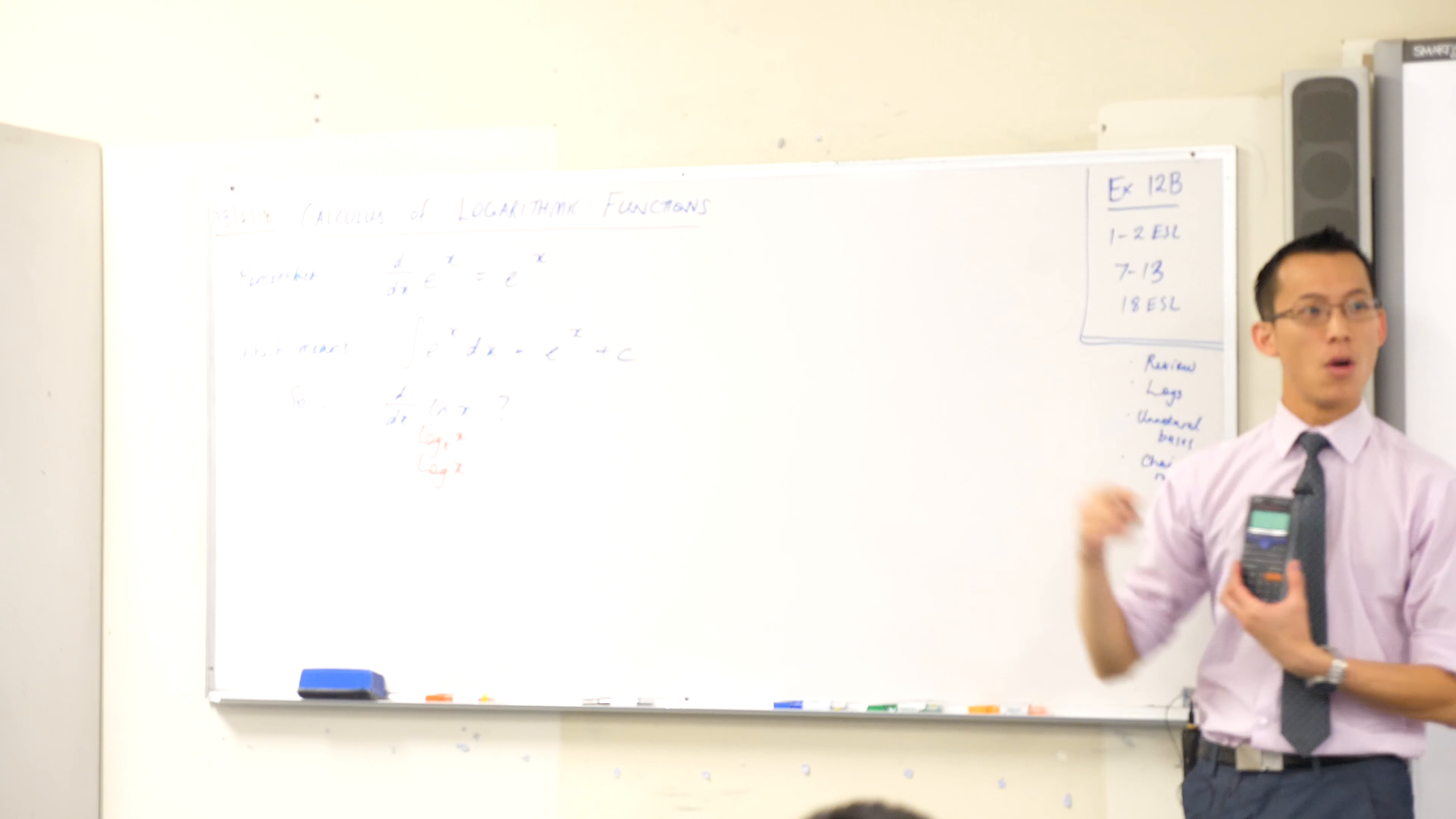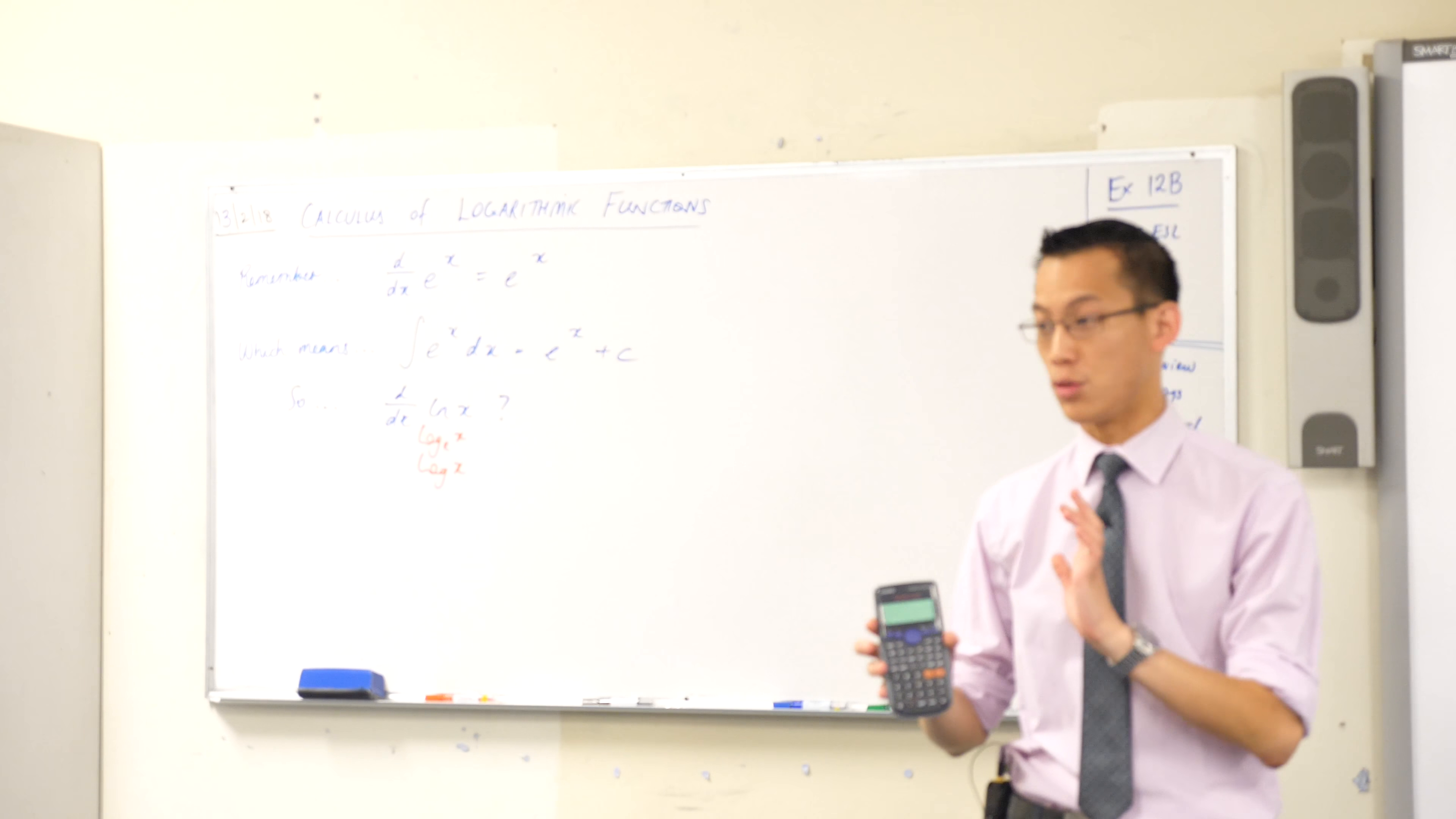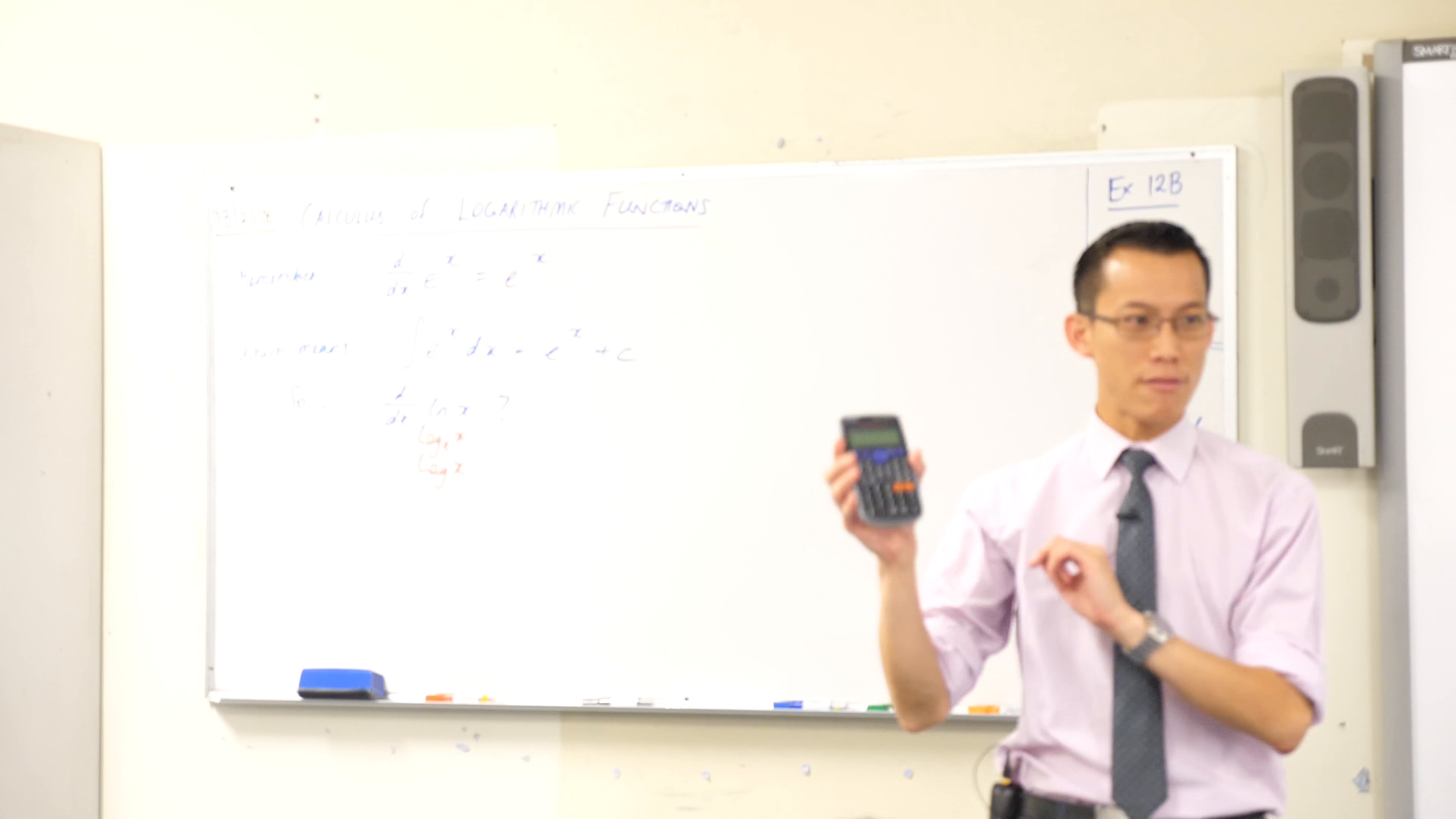One of the ways you can tell that it's base e is if you have a look above the Ln button, you can see it says e to the power of whatever, right? At least if you have the same calculator as I do, which the vast majority of you do. But then right beside it,